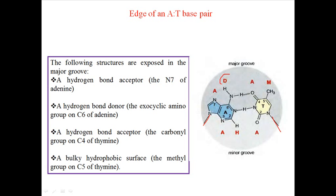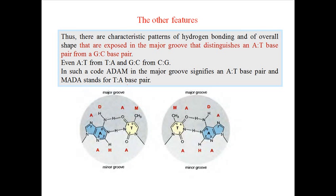In the major groove, we use the notation: D for donor (hydrogen bond donor), A for acceptor (hydrogen bond acceptor), and M for methyl group. In this major groove for an AT base pair, we find: acceptor, donor, acceptor, and methyl group (ADAM). In the minor groove of the AT pair we find: acceptor, hydrogen, and another acceptor. So in the major groove of AT we have: acceptor, donor, acceptor, methyl; and in the minor groove: acceptor, hydrogen, acceptor.